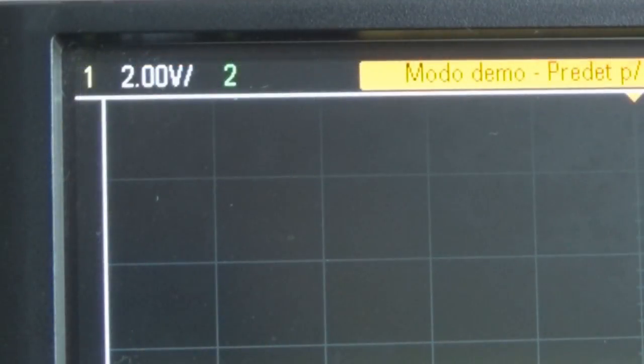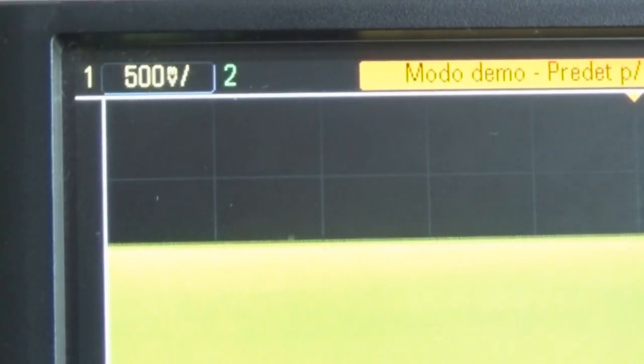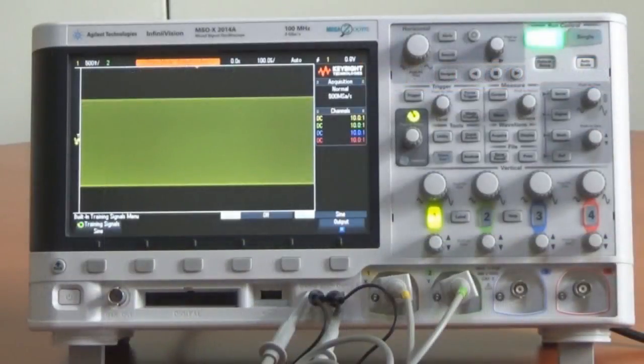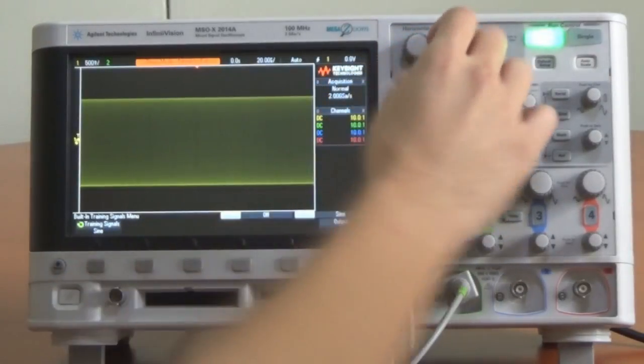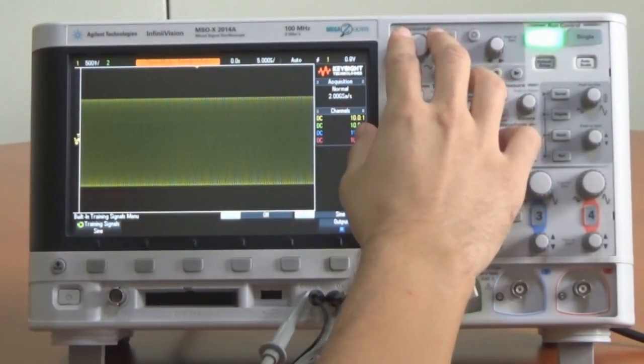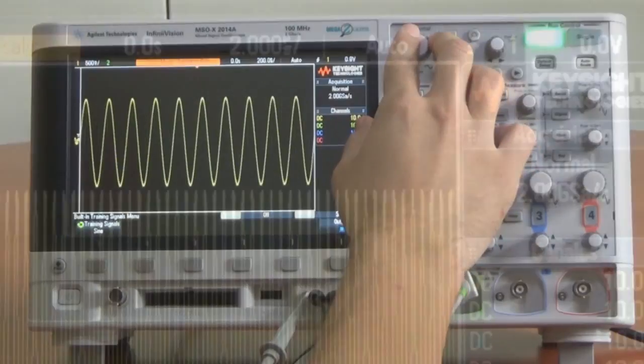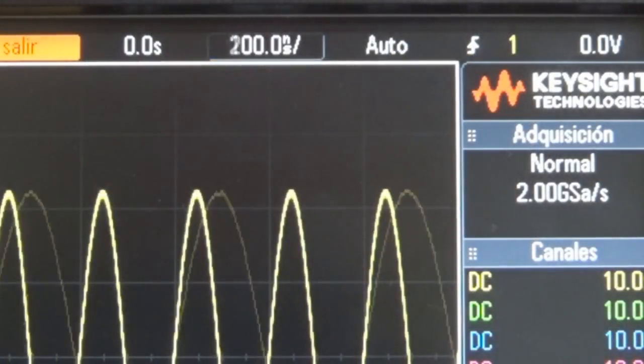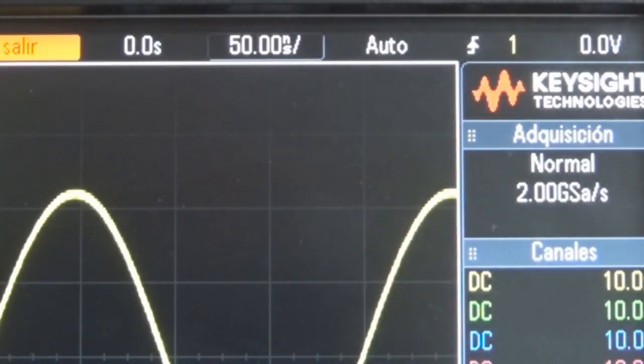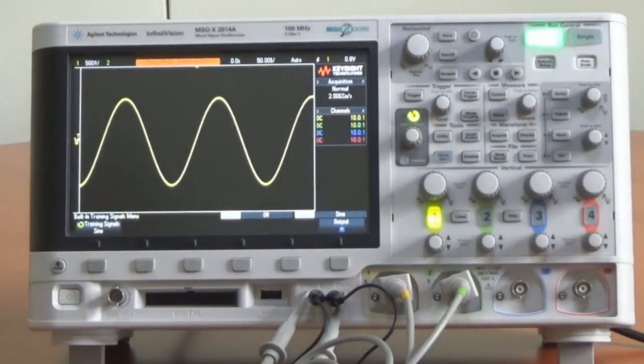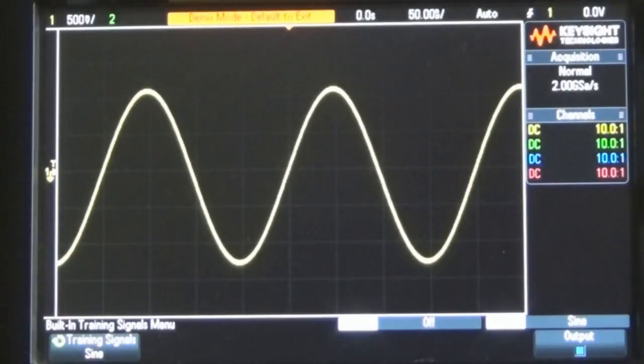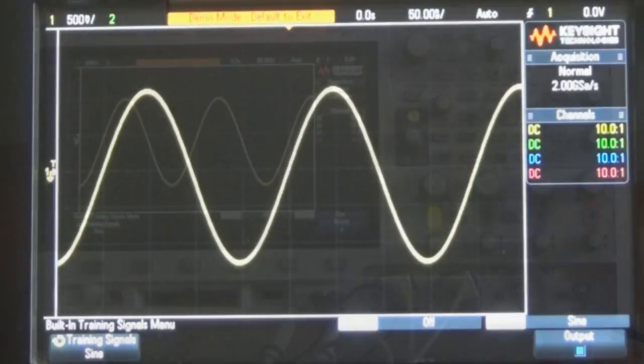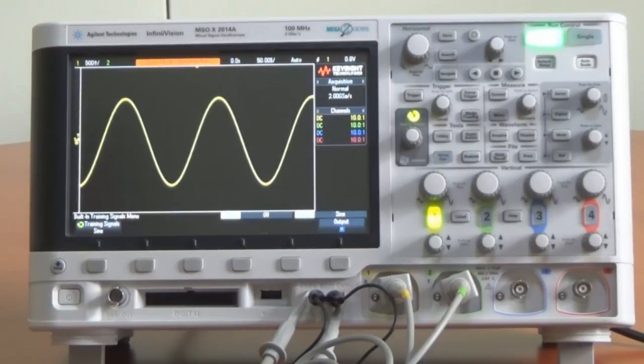Gire la perilla segundos por división en la sección horizontal hacia la derecha hasta que observe más de dos periodos de una onda sinusoidal a través de la pantalla. El ajuste correcto debe ser 50 nanosegundos por división. La pantalla del osciloscopio ahora debe ser similar a la que se muestra. A partir de este punto simplemente nos referiremos a esta configuración como el ajuste de base de tiempo del osciloscopio.